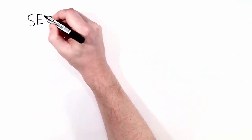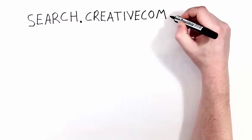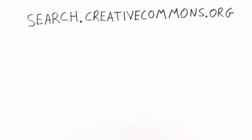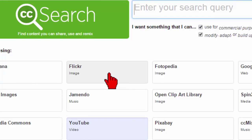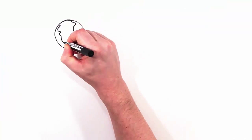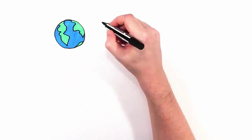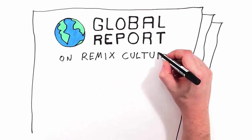There's a great way to find other people's Creative Commons licensed work to use online. You can use a search filter by going to search.creativecommons.org. You can search Jamendo for music, Flickr for photos, YouTube for videos, and all kinds of stuff.